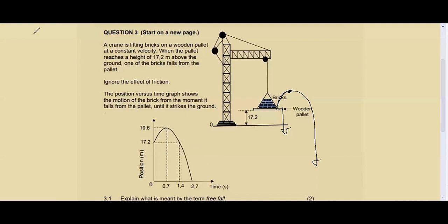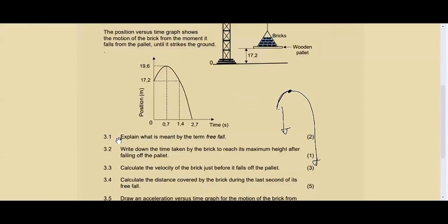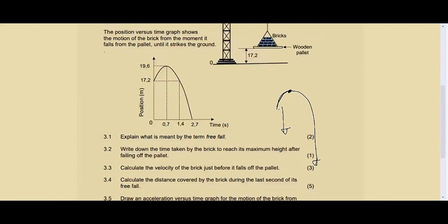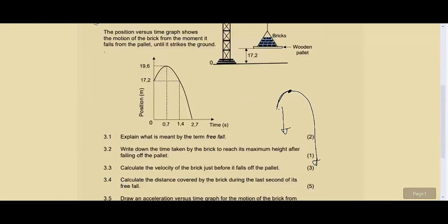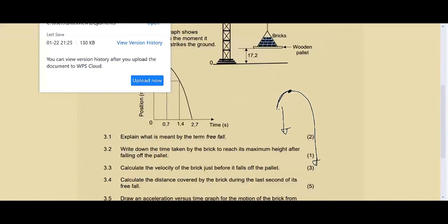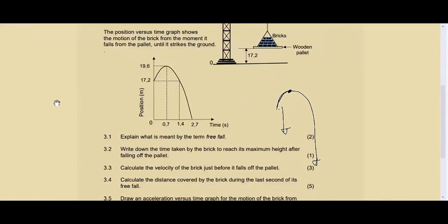Question 3.1 says: explain what is meant by the term 'free fall.' Free fall is the motion in which an object moves under the influence of gravitational force only, where there is no air resistance. That's two marks. When it comes to vertical projectile motion, just expect either this definition or the definition of a projectile.